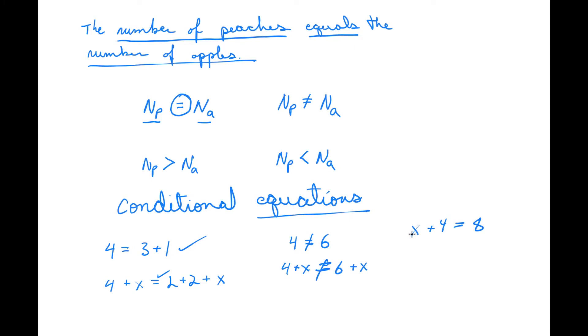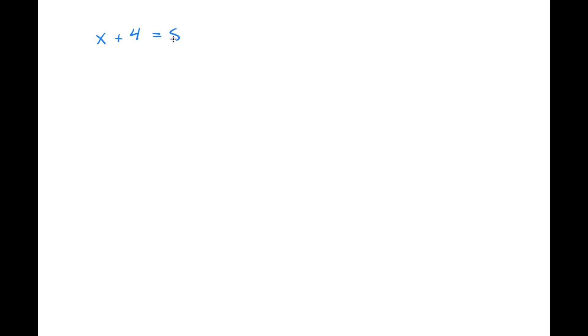We are looking for the unknown value — the variable — that makes the statement true. We want our math to be truth, and so we solve to find that truth. What is x? Let me show you how we solve an equation. If you haven't written all of this down, pause and do so. Here is how we would solve an equation: we had x plus 4, and it was set equal to 8.